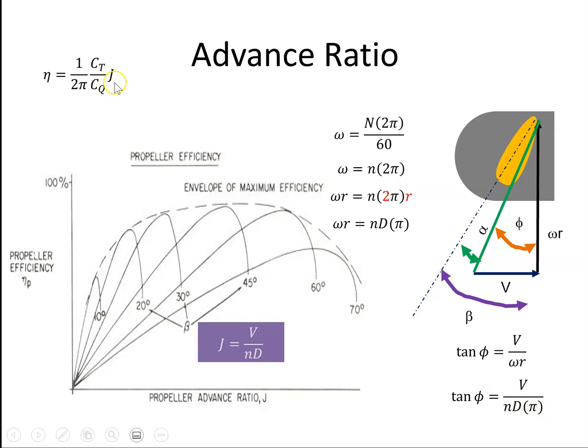So the higher the advance ratio, the better the efficiency. Until, of course, we get to the stage where we stall the propeller. But in the normal operating range, the higher the advance ratio, the greater the efficiency of the propeller.